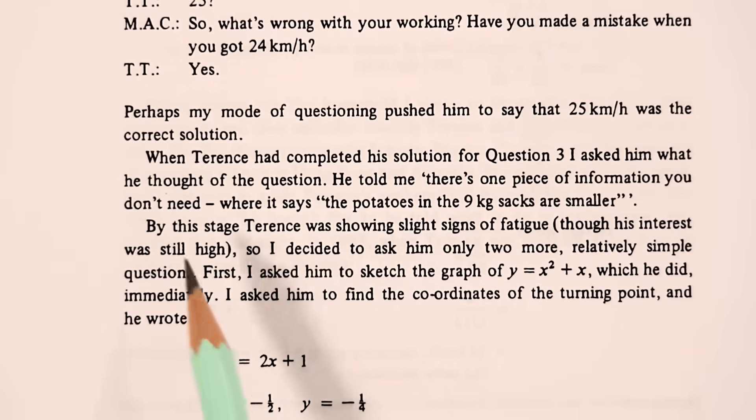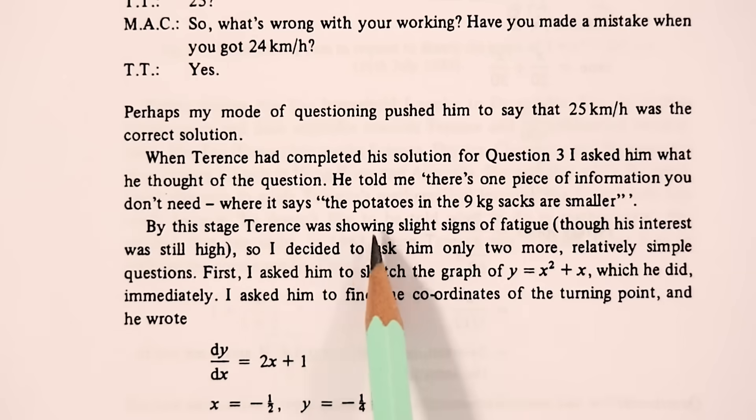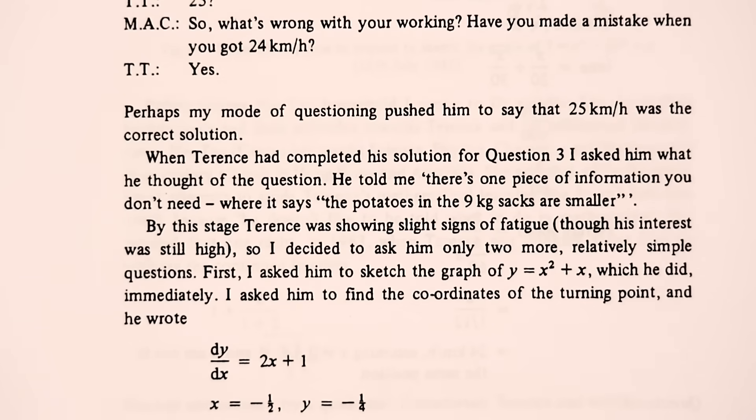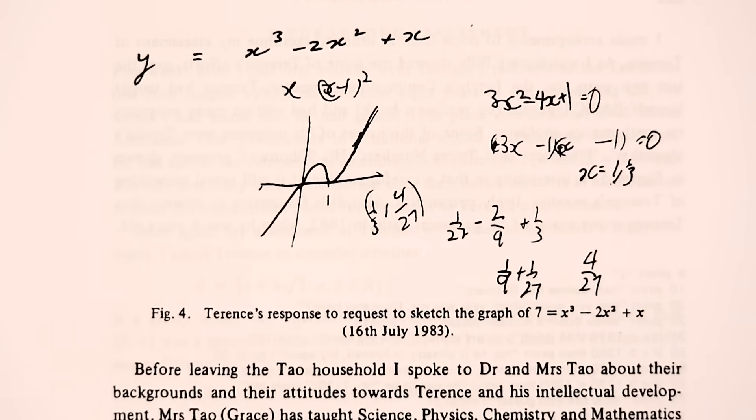And Clement says that at this stage, Terence was showing slight signs of fatigue, although his interest was still high. So he asked him just two more relatively simple questions. First, he asked him to sketch the graph of y equals x squared plus x, which he did immediately. I asked him to find the coordinates of the turning point, and he wrote them down. This response took 20 seconds. I then asked him to sketch y is equal to x cubed minus 2x squared plus x. And in about one minute, he produced this.